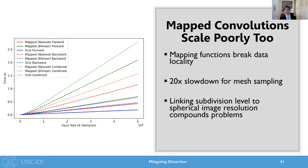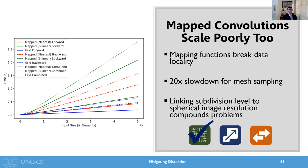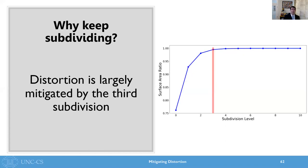Now, one of the big reasons for this is that seemingly useful analogy that ties subdivision level to spherical image resolution. Let's take stock of the map convolution approach. It does address the distortion issue because it enables convolution on the subdivided icosahedron, and it does enable transferability because it can be a drop-in replacement for any existing convolutional layer. However, it's not scalable due to data locality problems, and thus it's not a complete solution to our problem. One interesting thing to observe is that when using the subdivided icosahedron, distortion is more or less mitigated by the third subdivision. The ratio of the surface area of the subdivided icosahedron to that of a sphere approaches one as subdivision increases, and we see diminishing returns in terms of distortion reduction at subdivision level three. However, due to our analogy between image resolution and subdivision level, current methods are forced to continue subdividing in order to model higher resolution images — this is a source of the scalability problem.